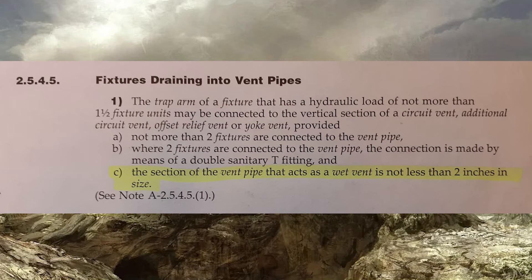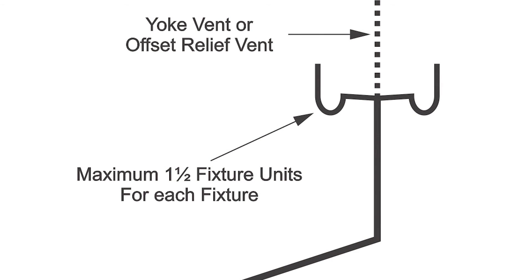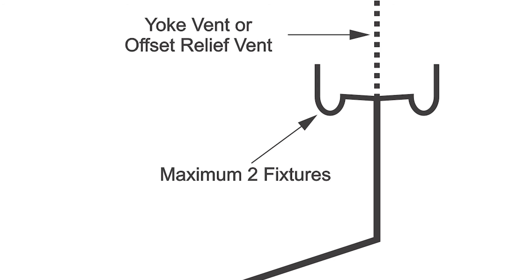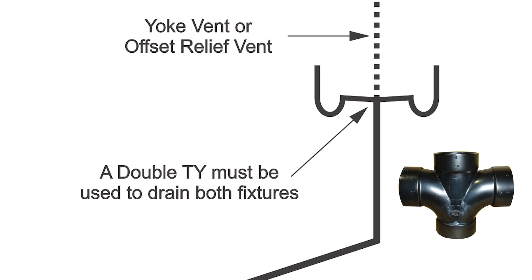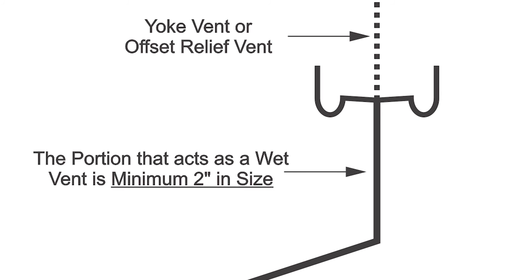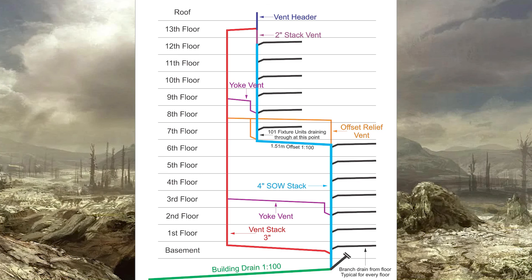Much like circuit vents, additional circuit vents, and yoke vents, we're allowed to put fixtures into an offset relief vent. Same clause 2545. The key points: fixtures are maximum 1.5 fixture units each, a maximum of two fixtures can be connected, and where there are two they are connected by means of a double TY, and the drain that drops down from them needs to be minimum two inch. Thank you for watching — stay tuned for the next video on sizing requirements for offset relief vents. Until then, have a great day.